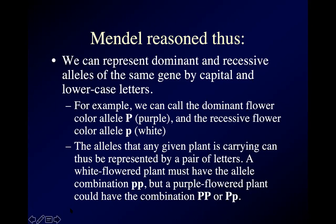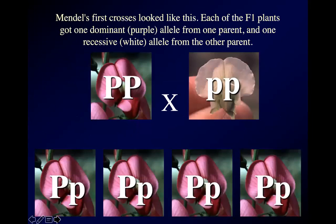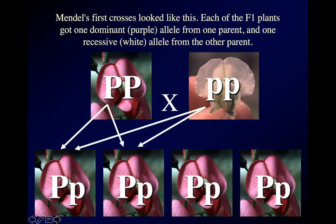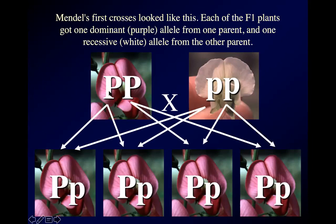The alleles that any given plant has can be represented by a pair of letters. His first crosses look like this: a pure-breeding purple-flowered pea plant whose alleles we represent as capital PP, and a pure-breeding white-flowered pea plant whose alleles we represent as lowercase pp. That's the parental generation, and their offspring make up the F1 generation — each gets one purple allele from one parent and one white allele from the other. Purple is dominant to white, so all the flowers look purple, but they're heterozygous.